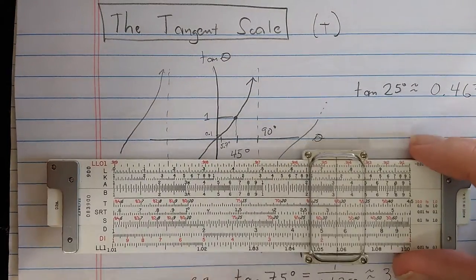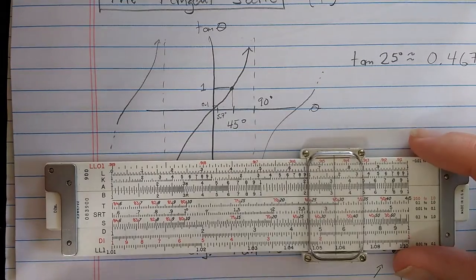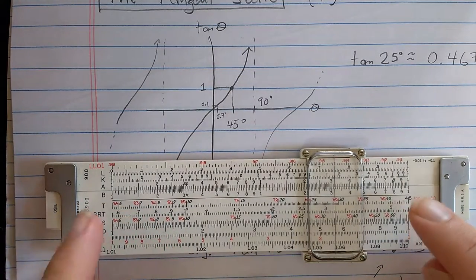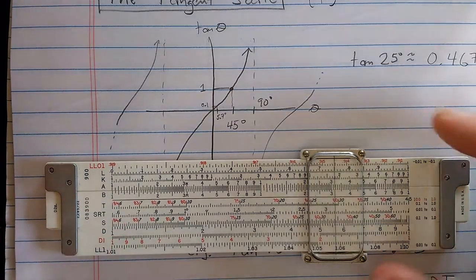Now I have the slide rule here set up for direct reading. Here is the T scale. I've aligned the indices of the T scale with the D scale.